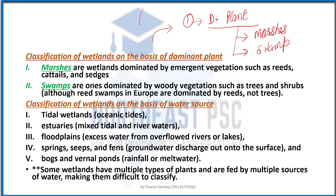Another classification is based on the water source. If it is tidal, it is called a tidal wetland. Other types based on water source include estuary, floodplain, spring, seep, fan, bog, or vernal pond.